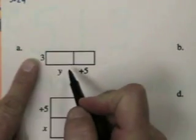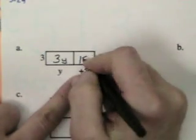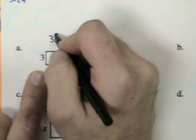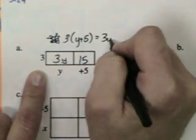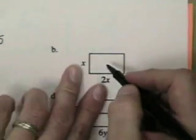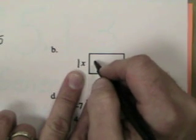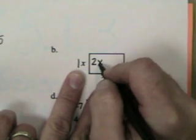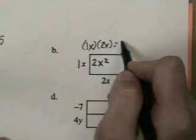First we're going to start with some where they've already given us the rectangles, and we just basically have to do the multiplication. See, 3 times y is 3y and 3 times 5 is 15. So if I wrote this out it would be 3 times (y plus 5) equals 3y plus 15. Let's look at this one. This is just a single box. 2 times 1 is 2, and x times x is x squared. So that's going to give me 1x times 2x equals 2x squared.